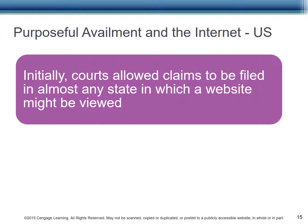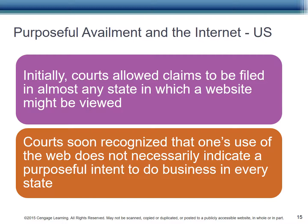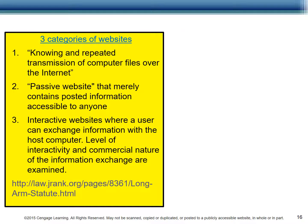Which is virtually everything now. At first, courts in the U.S. allowed claims to be filed in almost any state where a website might be viewed. Soon, however, they realized that just because you use the web to promote your business — which everybody does — does not show a purposeful intent to do business in every single state. The courts have defined three categories of websites. If a defendant enters into contracts that involve the knowing and repeated transmission of computer files over the internet, then personal jurisdiction is proper. Thus, if you know and intend to sell in a location, you may be called to that jurisdiction to answer for the claims against you.